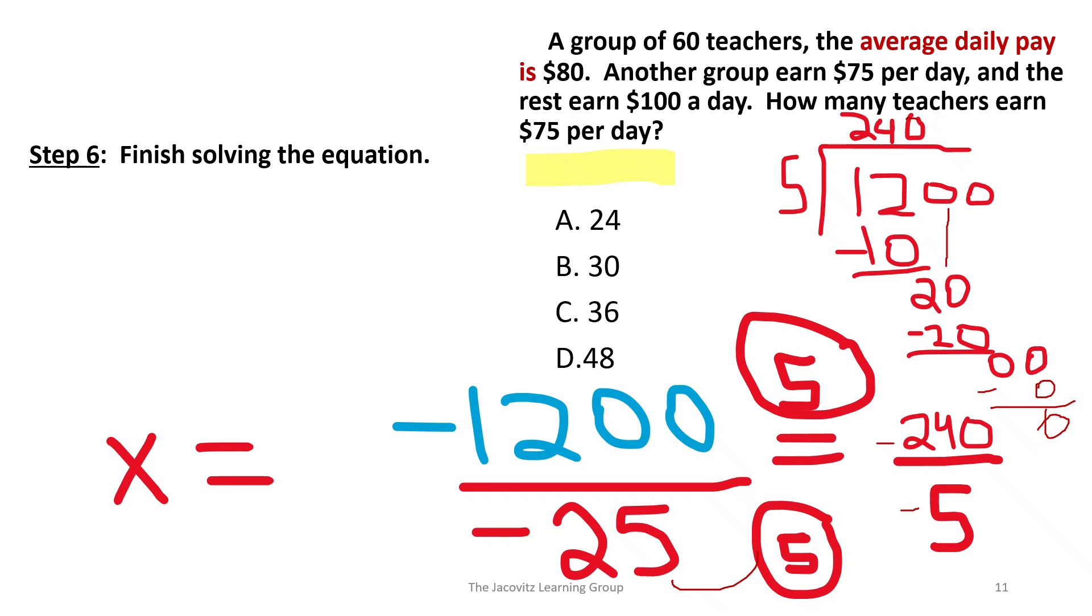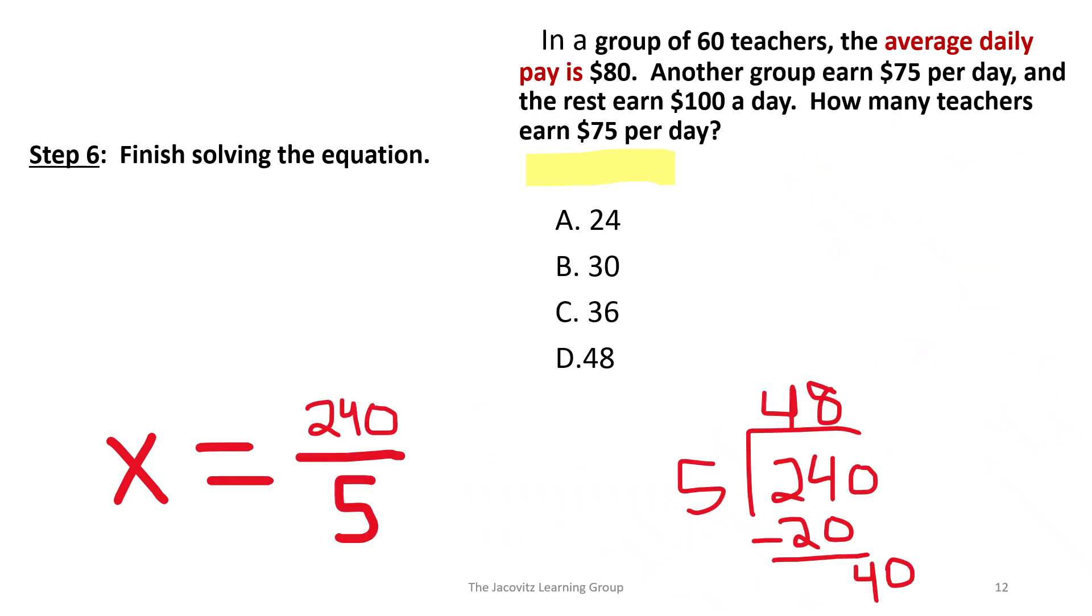You bring them down, you have no remainder. So you have 240, and 5 goes into itself 5 times. These are both negatives. So your answer is going to be positive. Your answer over here is going to be positive, 240. Two negatives times a negative equals a positive. So you just make them both positive. Now you have 5 into 240.